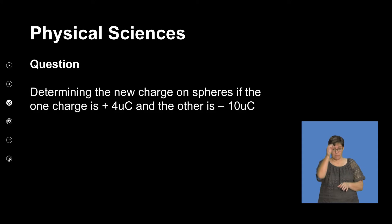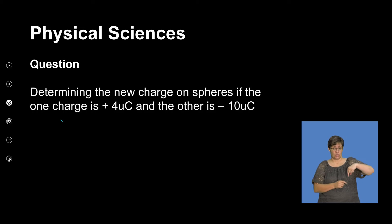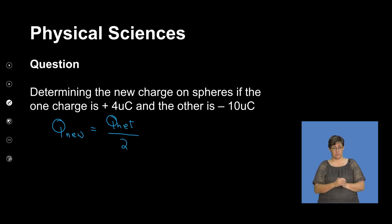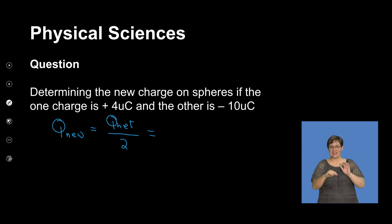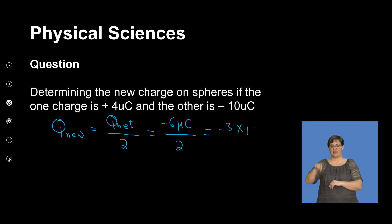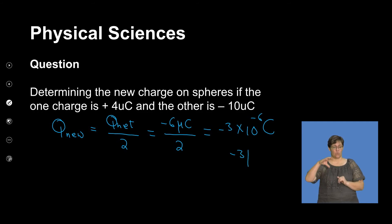The new charge on the spheres: Q_new equals Q_net divided by 2. This is the new charge based on the net charge, which we agreed is negative 6 microcoulombs, divided by 2 because charge is shared equally, giving negative 3 times 10 to the exponent negative 6 coulombs — negative 3 microcoulombs.